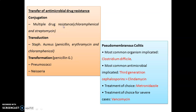Antimicrobial drug resistance is of three types. Conjugation involves physical contact between bacteria and is clinically very important, commonly seen with chloramphenicol and streptomycin — it causes multiple drug resistance. In transduction, genes are transferred through bacteriophage; commonly seen in Staph aureus with penicillin, erythromycin, and chloramphenicol. In transformation, genetic transfer occurs through the environment; example is penicillin G, commonly seen with Neisseria and pneumococci.